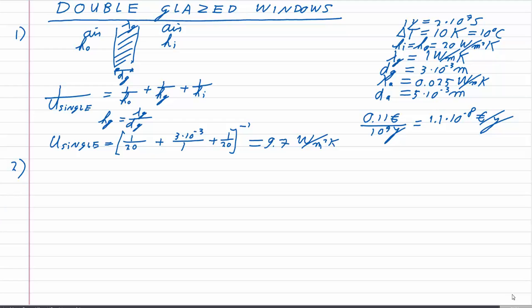Moving on to question 2: how much energy is lost through the single glass pane on a yearly basis while the heating is turned on? The answer is requested in units of energy per meter squared. Newton's law of cooling tells us the heat flux through a surface is U×ΔT, where U is what we calculated and ΔT is 10 Kelvin.